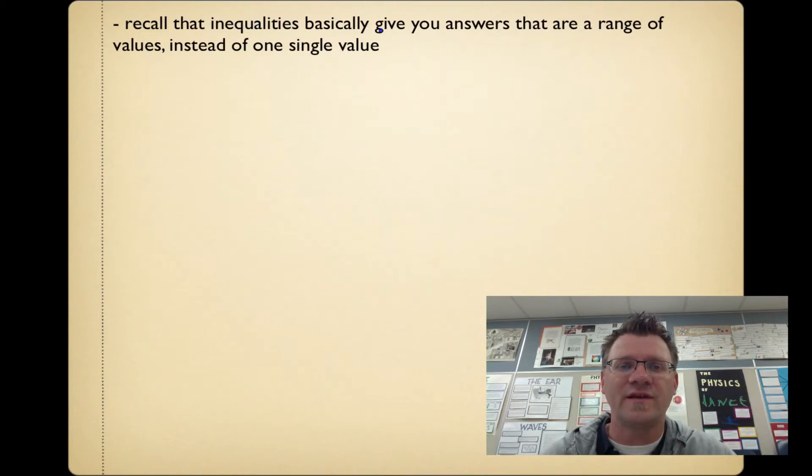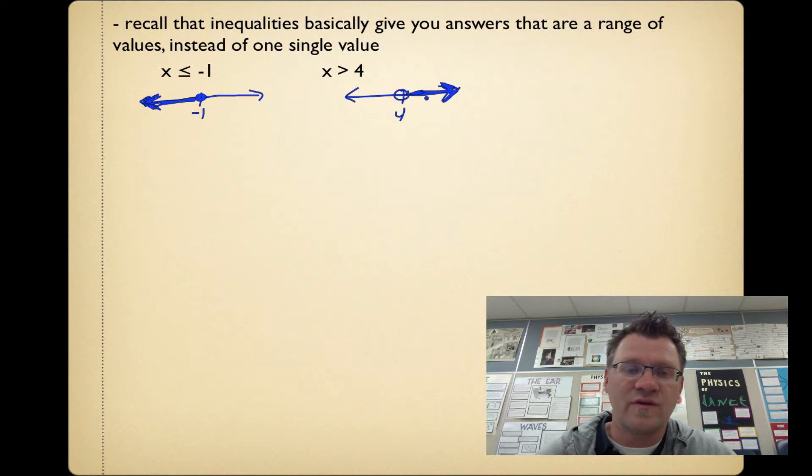Recall that inequalities basically give you answers that are a range of values instead of one single value. When we say x is less than or equal to negative one, we're saying it's everything to the left of negative one, everything less than. But it can be equal to negative one as well, so we use a solid dot. If we're talking about x is greater than 4, then we're going everything to the right-hand side, everything that's greater than 4. But it's not equal to 4, so we'd use an open circle as opposed to a closed-in circle.